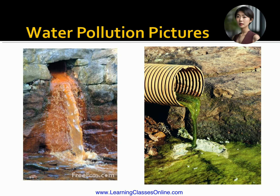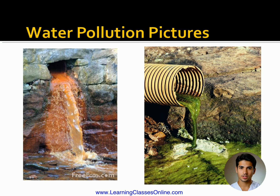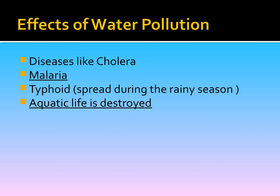Water pollution occurs when harmful substances enter our drinking water. Effects of water pollution include diseases like cholera, malaria, and typhoid, which spread especially during the rainy season. Aquatic life is also destroyed.